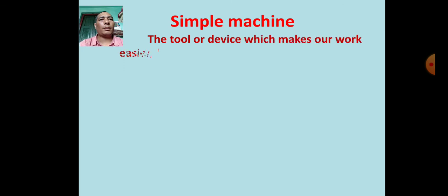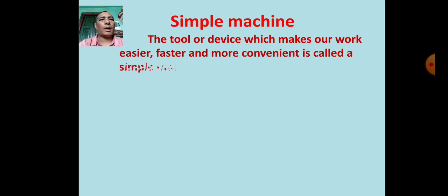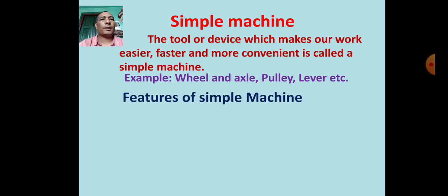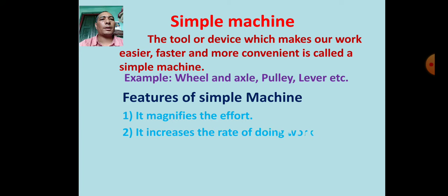A simple machine is a tool or device which makes our work easier, faster, and more convenient. Examples include the wheel and axle, pulley, and lever. Features of a simple machine: (1) it magnifies the effort, (2) it increases the rate of doing work.